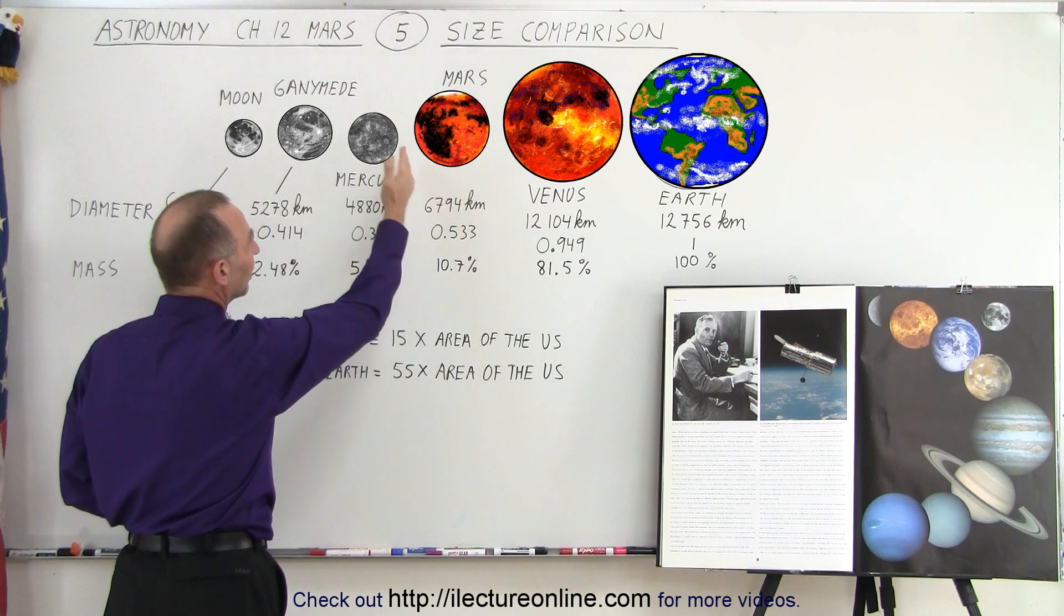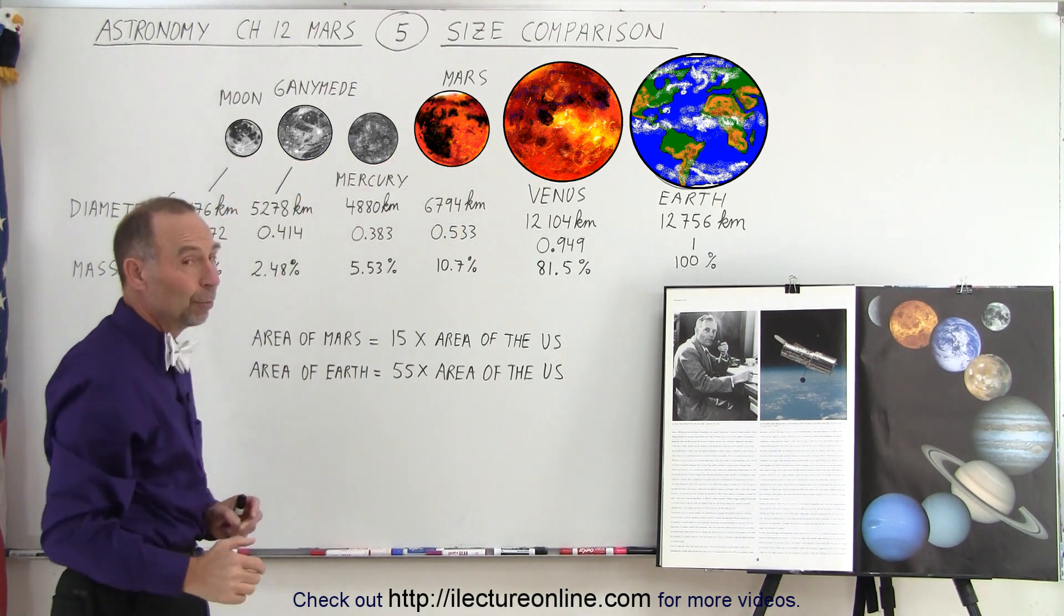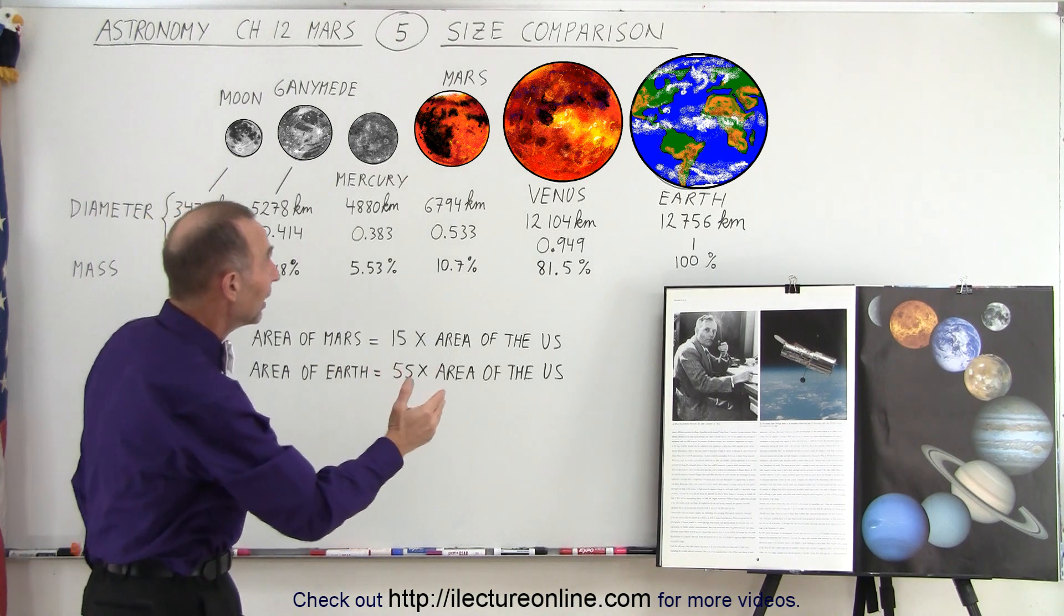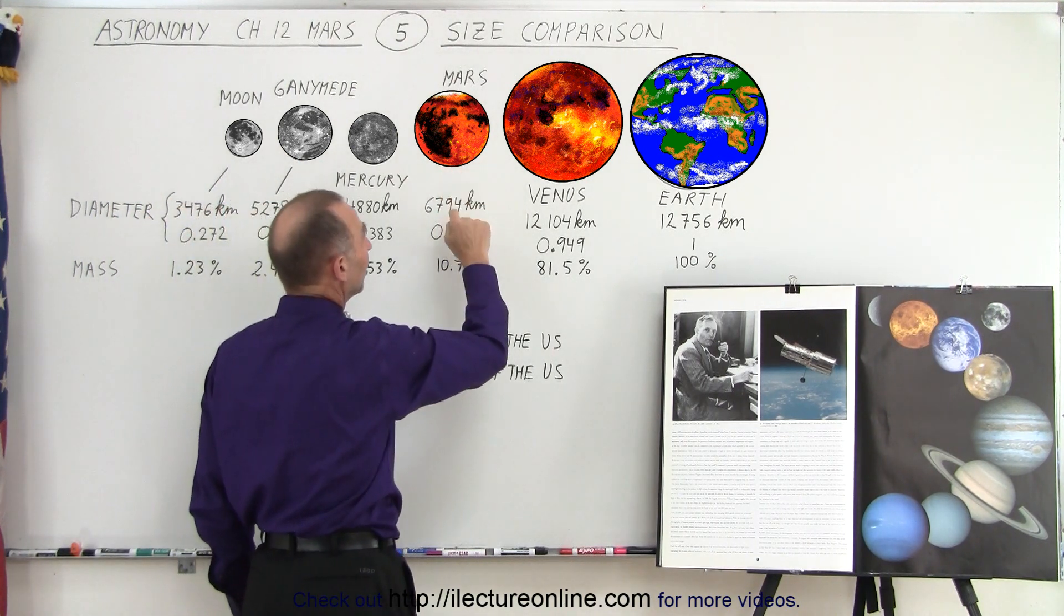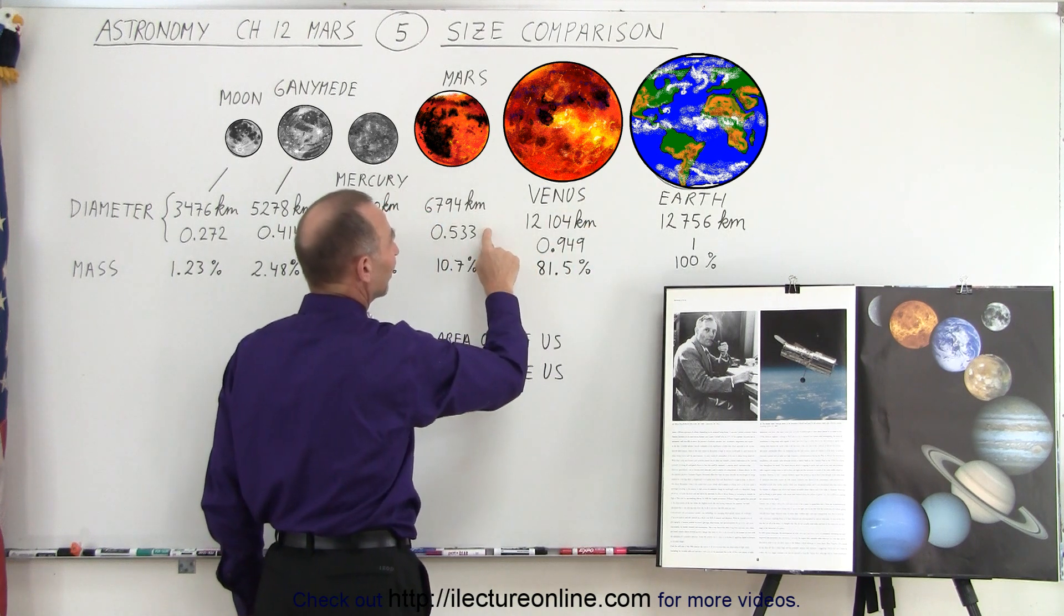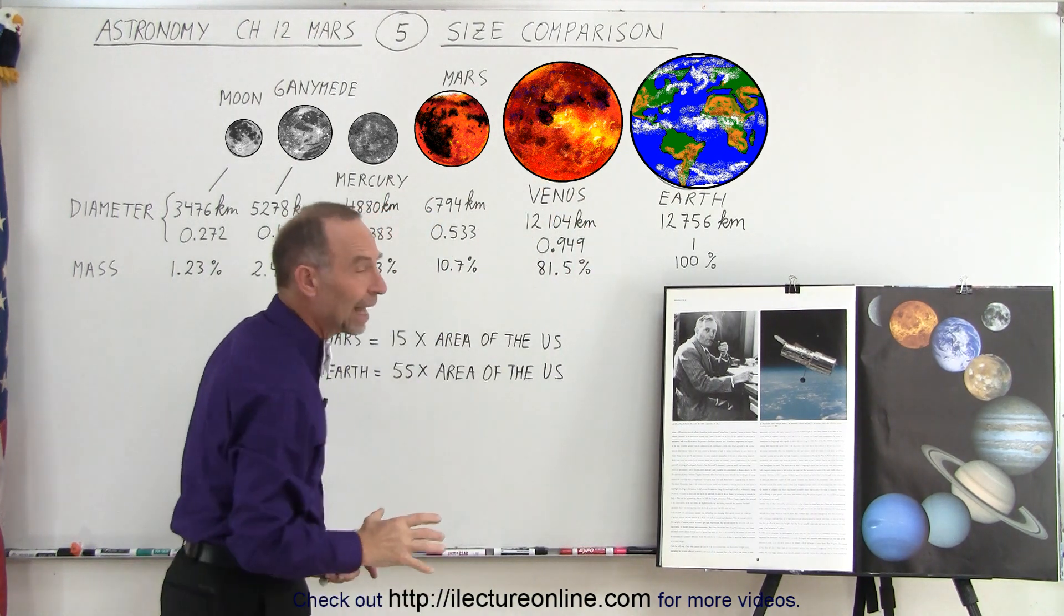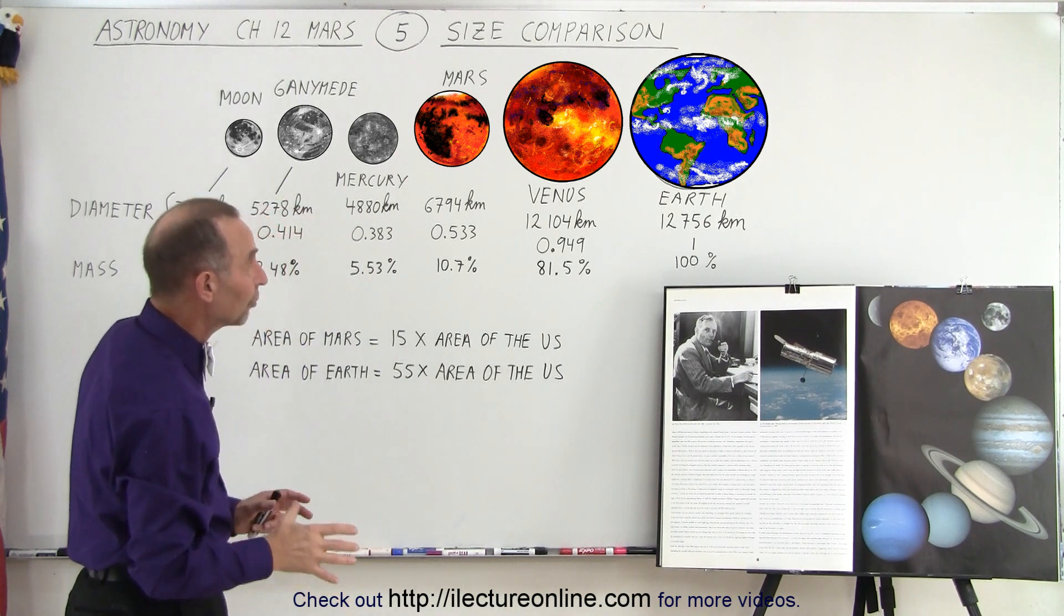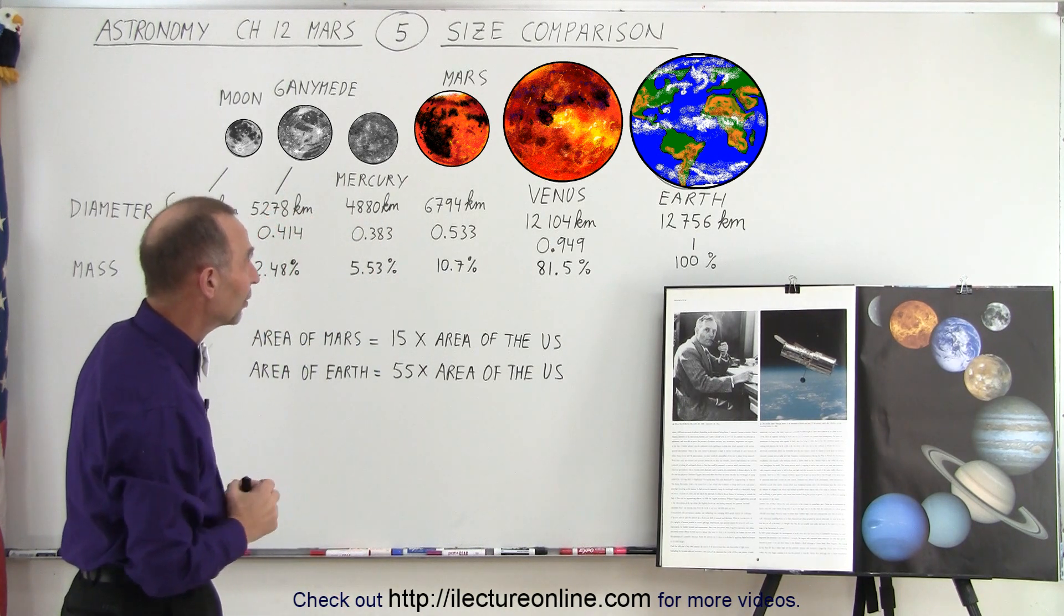So it's significantly larger than Mercury and the largest moon Ganymede. But relative to Venus and Earth, it is quite a bit smaller. It is a little bit more than 50% the diameter of Earth and about 60% the diameter of Venus. So you can see that compared to those two larger terrestrial planets, Mars is relatively small.